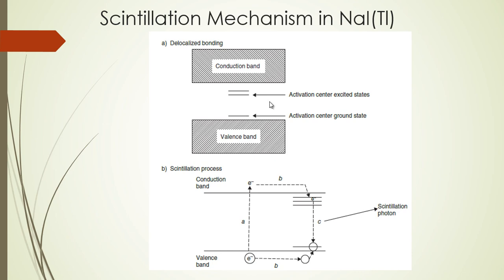This gives a photon of approximately 3 electron volts from the thallium-activated sodium iodide detector. For example, if a gamma ray from a cesium source at 662 keV imparts around 500 keV to an electron in the crystal, that electron causes many excitations and ionizations, sending many electrons to the conduction band. When all those electrons return to the ground state by this process, a large number of photons of about 3 eV are emitted, corresponding to the ultraviolet or blue range of the electromagnetic spectrum.